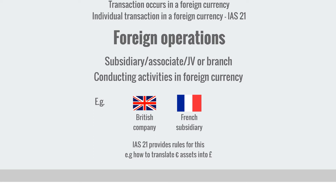We need rules for this because exchange rates change all the time. The British pound compared to the euro changes on a daily basis throughout the year. So if you're trying to consolidate a French subsidiary for an entire financial period — say a year — how do you do that accurately given the exchange rate will have been changing throughout the year? How do you know how much that French subsidiary is worth in British pounds? That's why we use IAS 21, and we'll see later on what the rules are for doing the accounting.